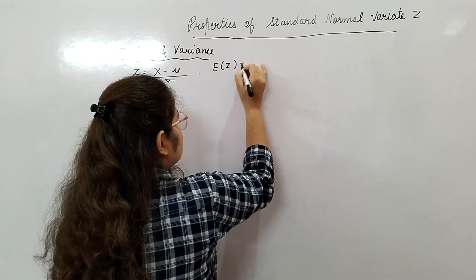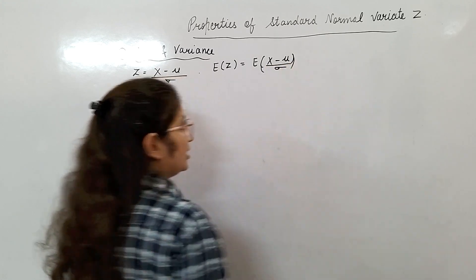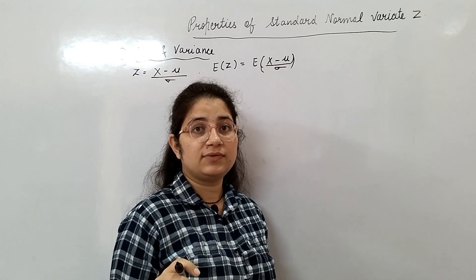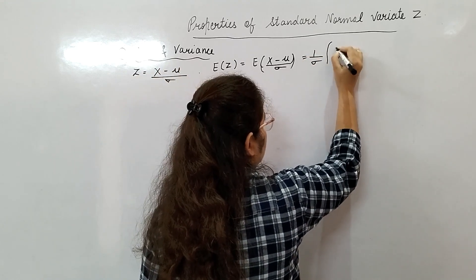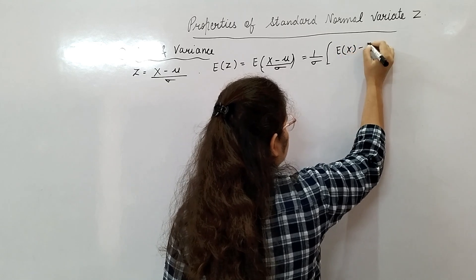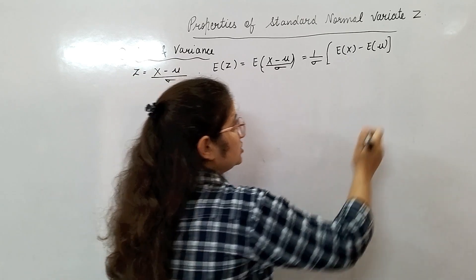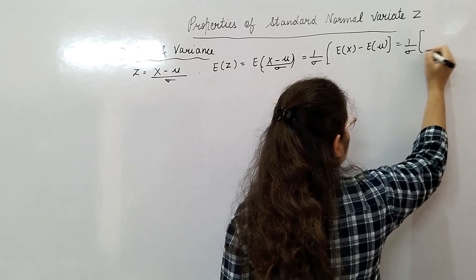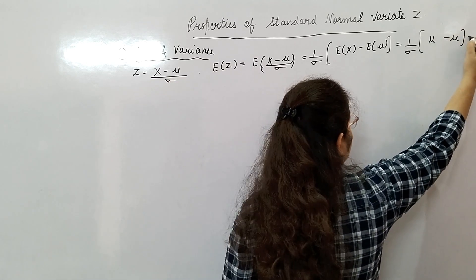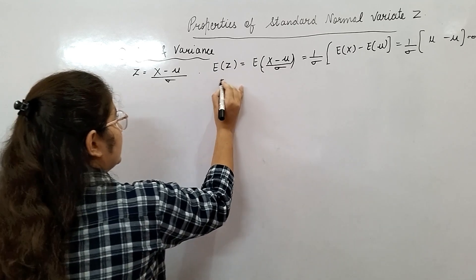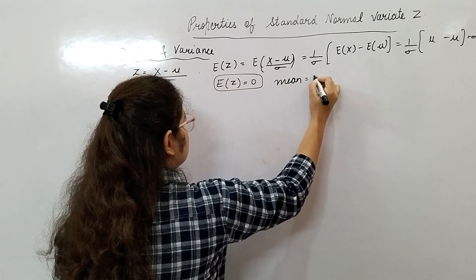Now expectation of Z equals expectation of X minus mu by sigma. Expectation of constant will be that constant function itself. So 1 upon sigma will come outside, expectation of X minus expectation of mu. Mu is again a constant, it will come outside. This will be 1 upon sigma, expectation of X minus mu. Expectation of X will be its mean which is mu. So mu minus mu is 0. From here expectation of Z equals 0, which means mean is 0.